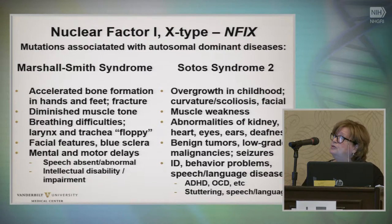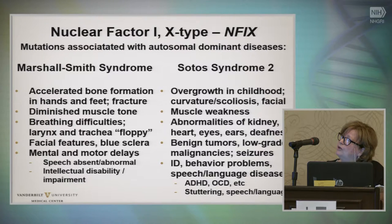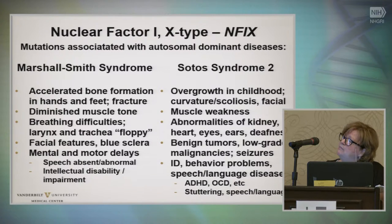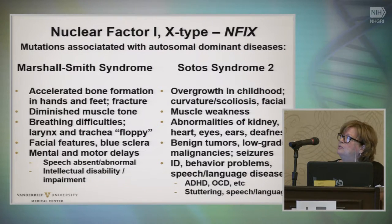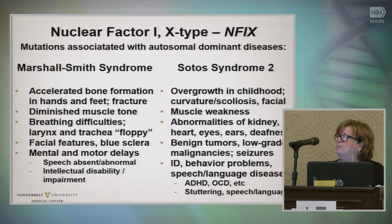Sotos syndrome is also associated with mutations here. You see some overgrowth in childhood, curvature and scoliosis, facial features, muscle weakness, and more congenital abnormalities of the kidney, heart, eyes, and ears. There can be deafness, benign tumors, low-grade malignancies, seizures, intellectual disability, behavior problems, speech and language disorders, ADHD, insistence on sameness, and stuttering.